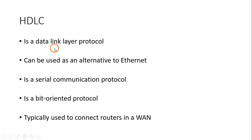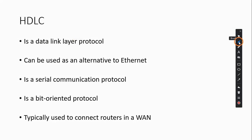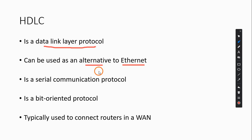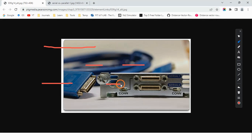Here are some key points about the HDLC protocol. It is a data link layer protocol — as you already know, in the OSI model the second layer is the data link layer. The famous technology we use at the data link layer is Ethernet, which is frequently used within LANs. You can consider HDLC as an alternative to Ethernet. HDLC is a serial communication protocol.